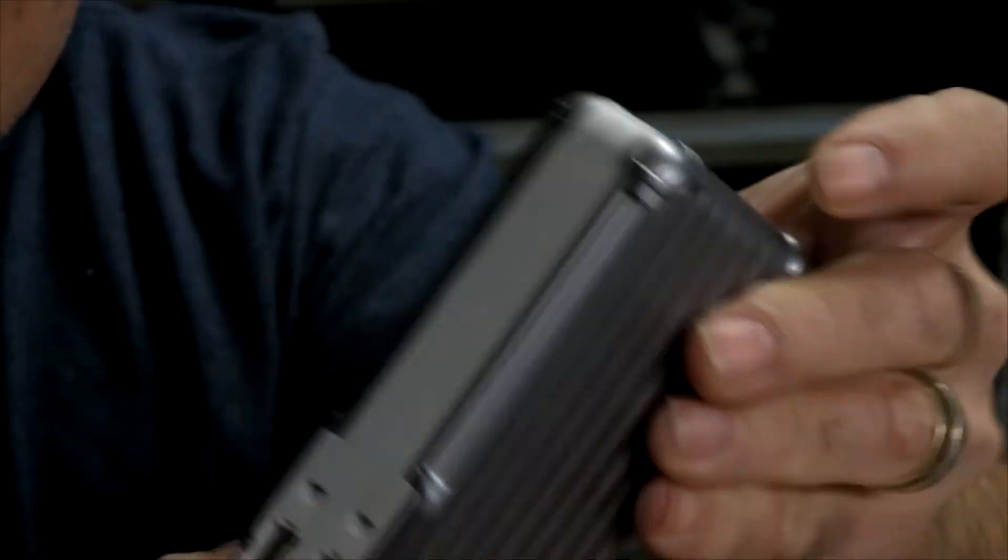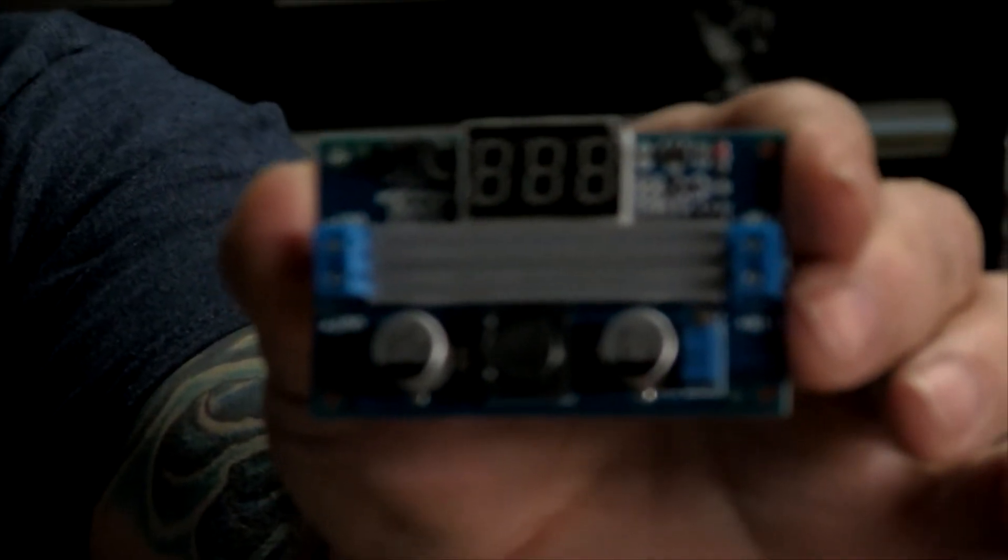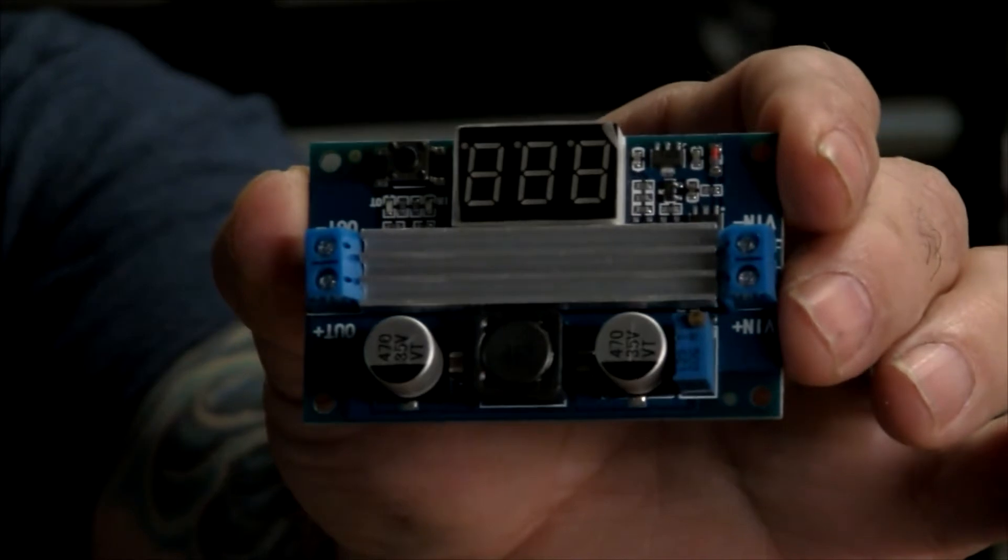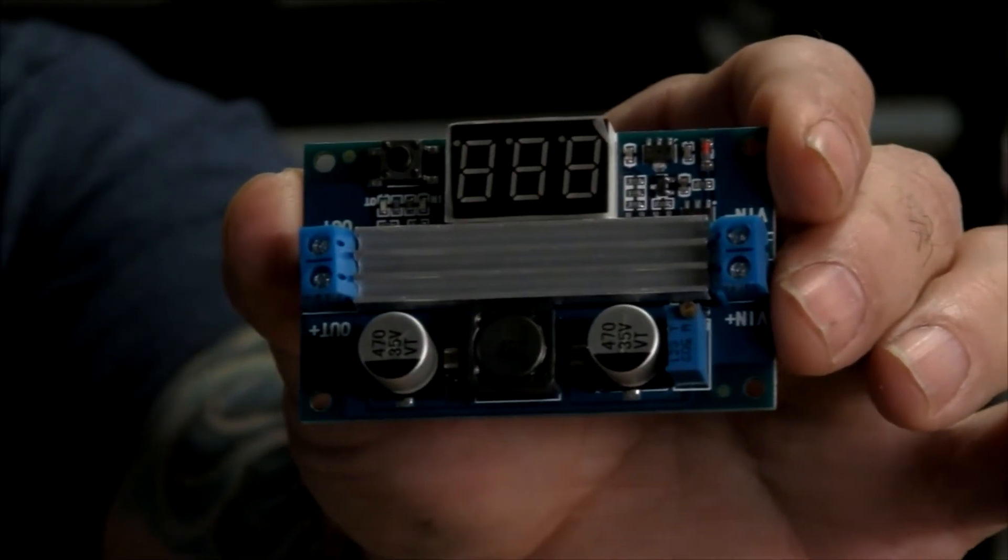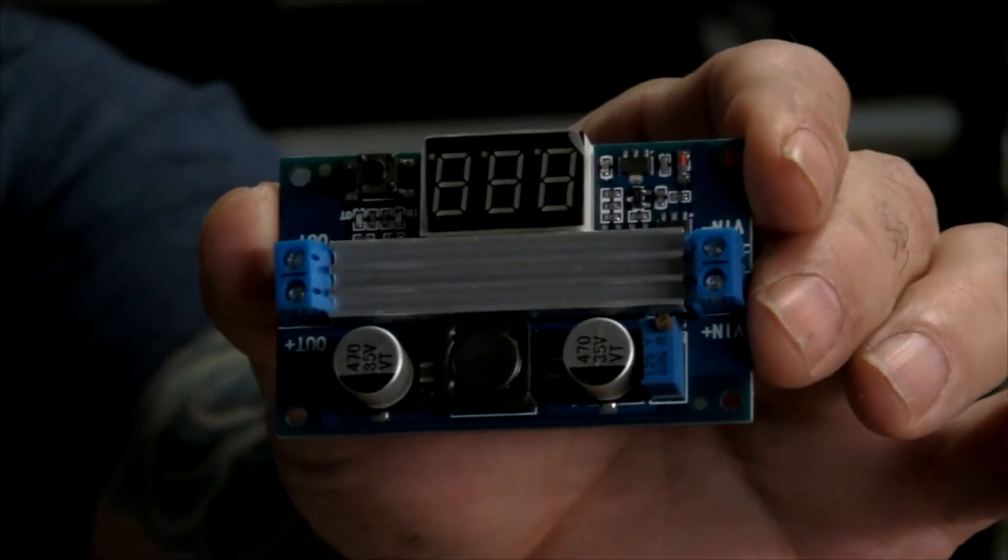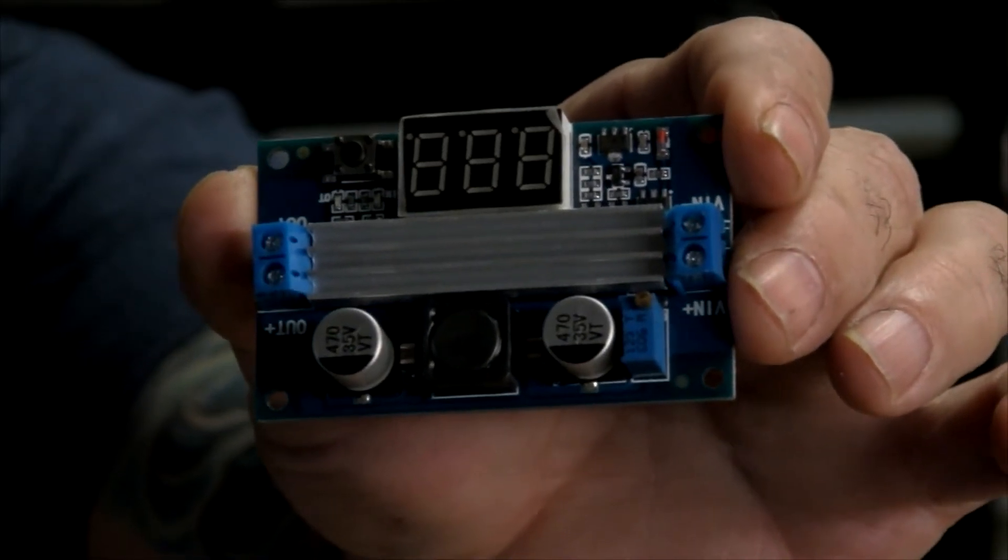I'm using this little power supply converter and basically you can put just about any voltage in DC and adjust it to any voltage out. So we'll be using this to take the 5 volts from the USB to 8.4 volts that's going into the camera. I've got a little project box, we'll put the entire power supply converter in here and drill holes to go in and out.